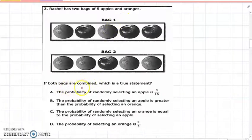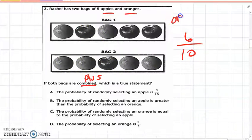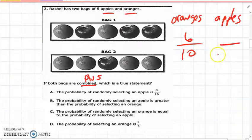Rachel has two bags of five apples and oranges. If both bags are combined—combined means plus—what is a true statement? Okay, so let's look at if they're combined, how many total? Do we have five, do we have ten total? And so how many oranges do we have total? We have six oranges. So these are the oranges. And then, how many? I mean there's ten total, but six oranges, that means we have a total of these. Well, this fraction can be simplified.